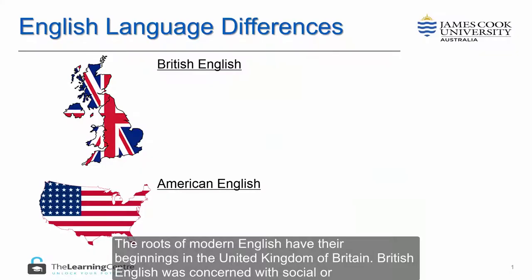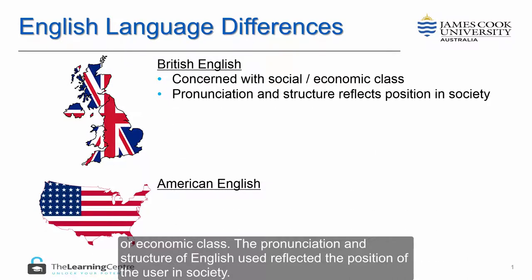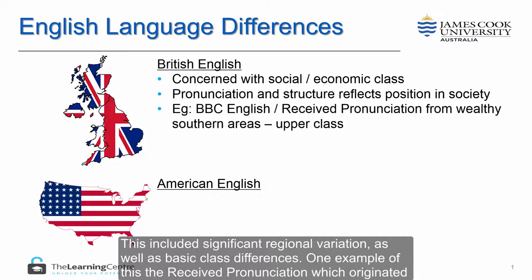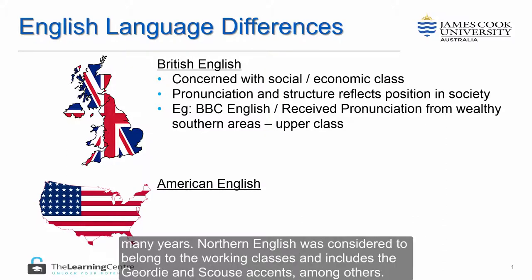The roots of modern English have their beginnings in the United Kingdom of Britain. British English was concerned with social or economic class — the pronunciation and structure of English used reflected the position of the user in society. One example of this is received pronunciation, which originated in the wealthy southern areas of the country and became known as standard or BBC English, the acceptable broadcasting standard for many years.